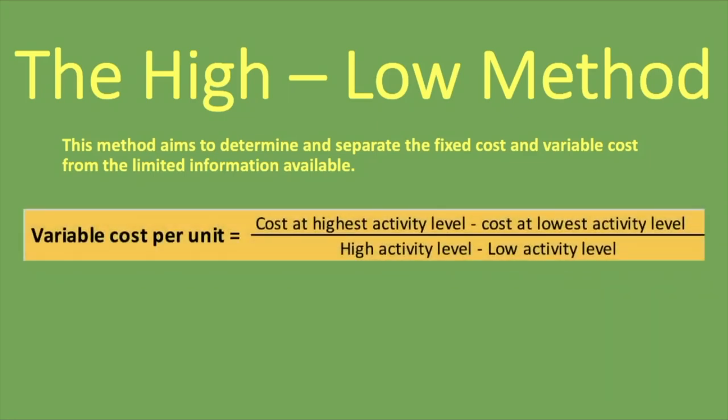The formula is: the cost at the highest activity level minus the cost at the lowest activity level, divided by the high activity level minus the low activity level. This might seem difficult or complex, but once we look at an example of calculating the variable cost per unit using the high-low method, you'll see how easy it is.